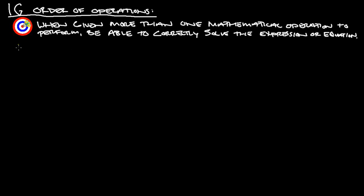Now, I'm sure most of you have heard of PEMDAS, or 'Please Excuse My Dear Aunt Sally.' That stands for the order you follow when you have some kind of expression or equation with several mathematical operations: parentheses first, then exponents, then multiplication, then division, then addition, then subtraction.